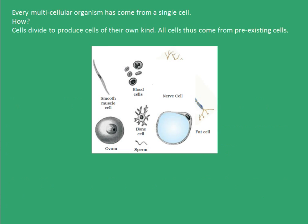Every multicellular organism has come from a single cell. Cells divide to produce cells of their own kind, and all cells thus come from pre-existing cells. Some examples of cells are smooth muscle cells, blood cells, nerve cells, fat cells, the reproductive cells — sperm and ovum — and the bone cell, as shown in this picture.